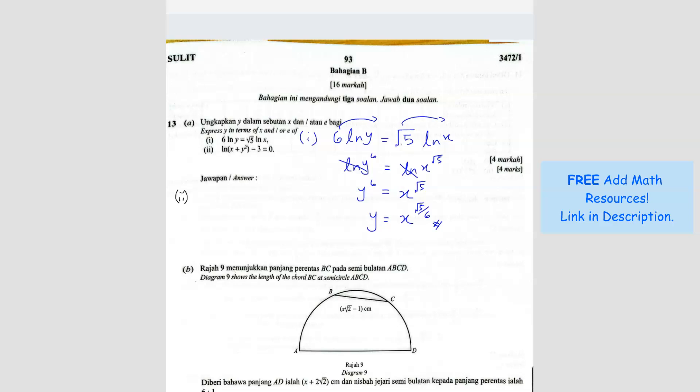Question 2. Ln of x plus y square minus 3 equals 0. So this one, I can bring the 3 across there. You get positive 3. And then when I bring the ln, it becomes e to the power of 3. So x plus y square equals e to the power of 3. So y square equals to e power 3 minus x. And then the square you bring over becomes square root. So y equals to square root of e power 3 minus x.